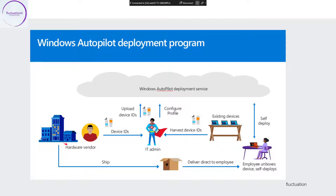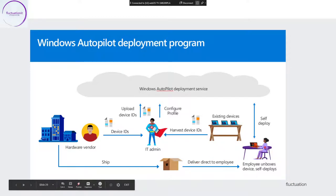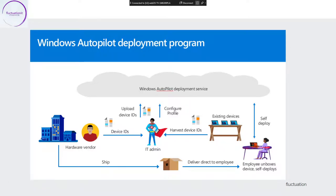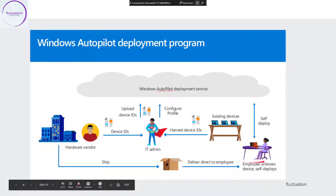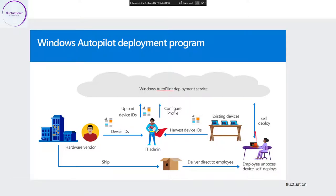You buy new computers from Dell, IBM, Lenovo, HP, or any vendor, and you ask your hardware vendor to give you all the device IDs. You upload the device IDs to Autopilot and configure a profile. For existing devices, you can also retrieve the ID with a PowerShell script. What's fantastic is that when you ship the new laptop to a user — even someone working at home — Dell can ship it directly to their home address, and Autopilot will retrieve all the configuration information automatically.